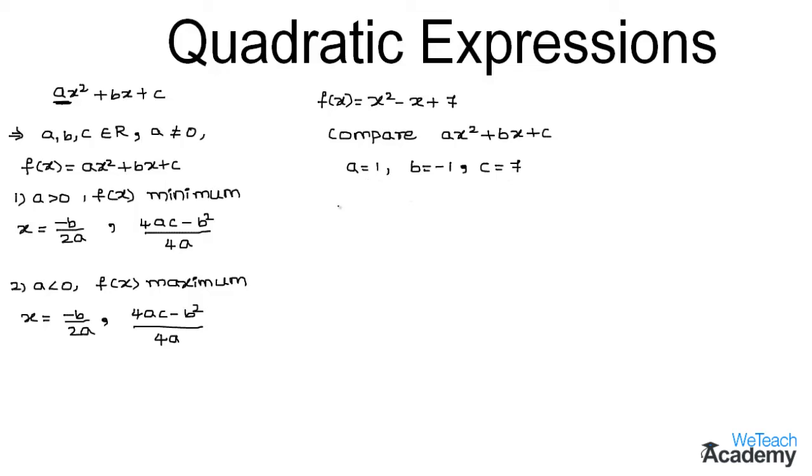We observe that the coefficient of x², which is 1, is greater than 0. Then we can see that f(x) has a minimum value. Therefore, let us find the minimum value with the formula (4ac - b²)/4a.